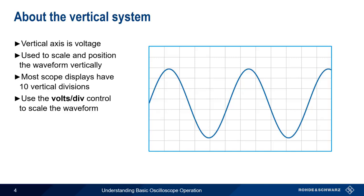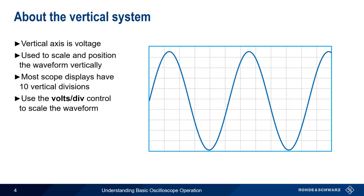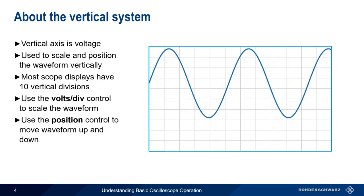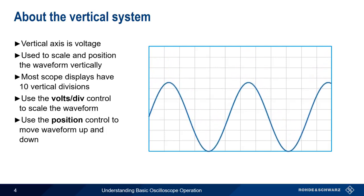If we increase volts per division, our waveform shrinks, and if we decrease volts per division, our waveform grows. We can use the position control to move our waveform up or down on the screen.